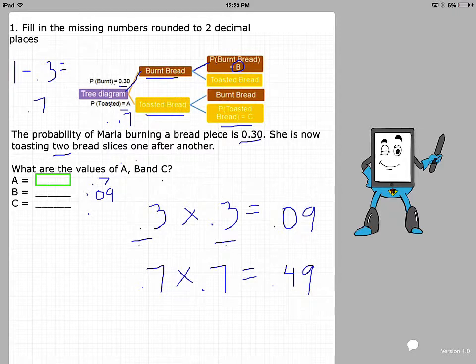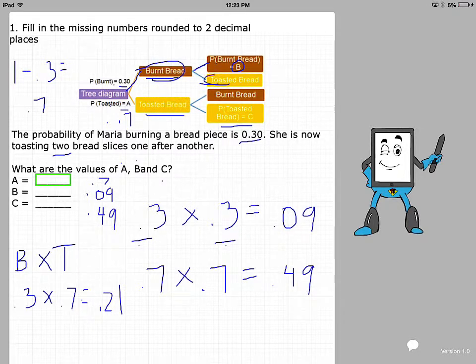Let's say that we wanted to have one burned and one toasted. Then we would multiply 0.3 times 0.7, and that has a probability of 0.21. That might be, for instance, following this track, one burned and one toasted.